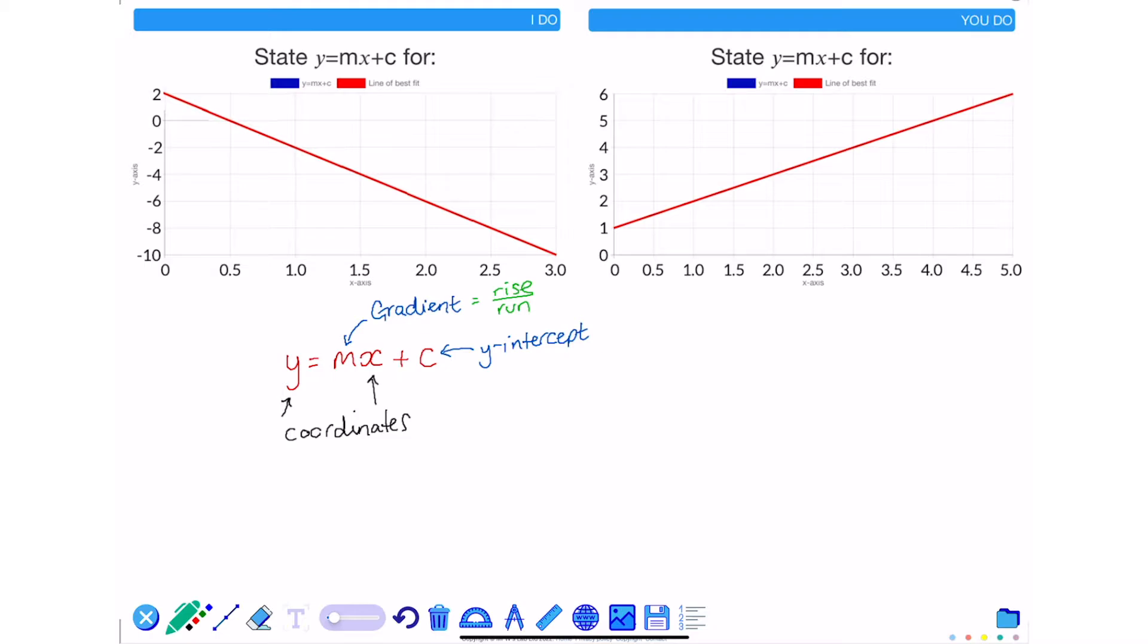So I can identify two coordinates, the first being this point here which is 1, negative 2, and this point here which is 2, negative 6.